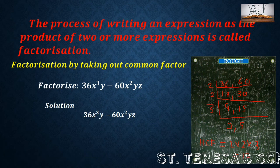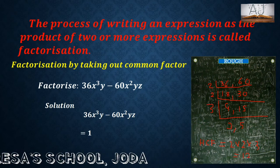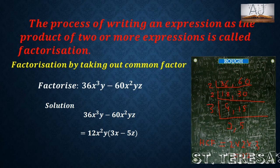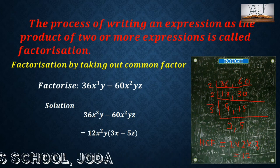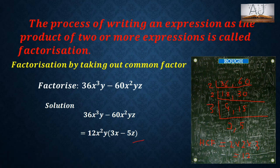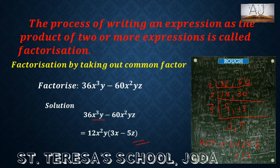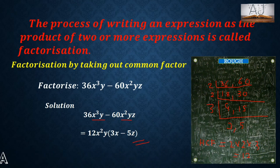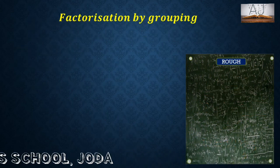Among the numbers the common factor is 12, so we can take 12 common. But for x cube y and x square yz, we have even x square and y common. So 12x square y is taken common, and what is left inside the bracket is 3x minus 5z. Among x cube y and x square yz we have x square and y common, and thus we get the factors.